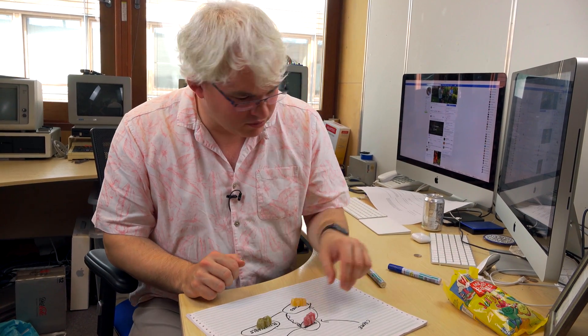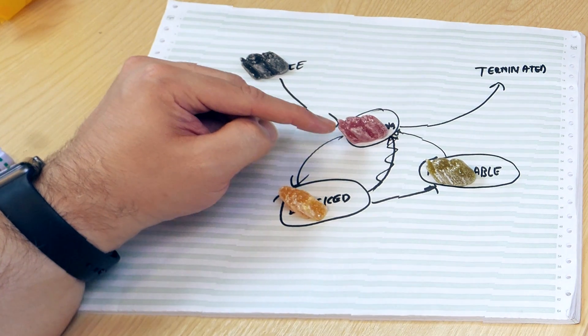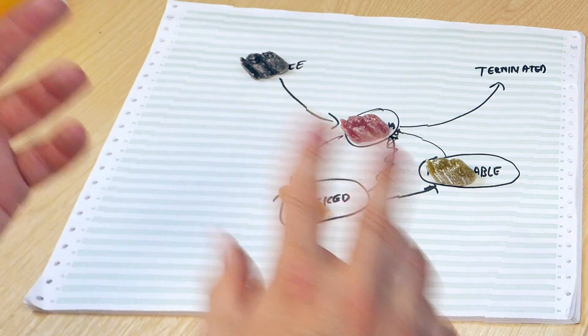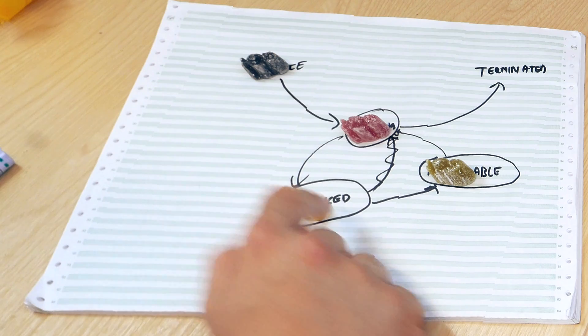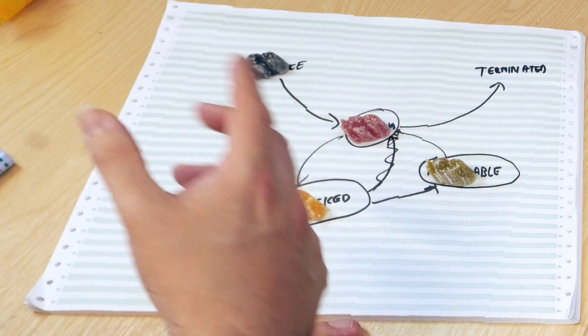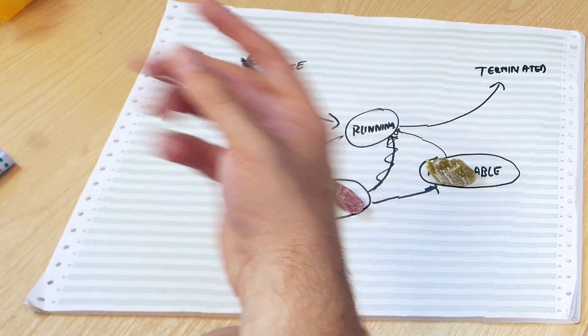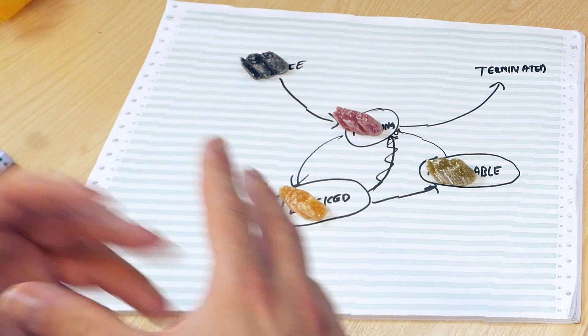But consider this: say a process gets stuck in an infinite loop. We've now got a problem. The operating system, the way we've designed it so far, can only switch when one of these processes hands control to it — when it calls the OS. This is what we call a cooperative multitasking system, because we require the processes to cooperate — they have to hand control back to the operating system at some point. Operating systems like the original Mac OS and Windows 3.1 worked in this fashion.